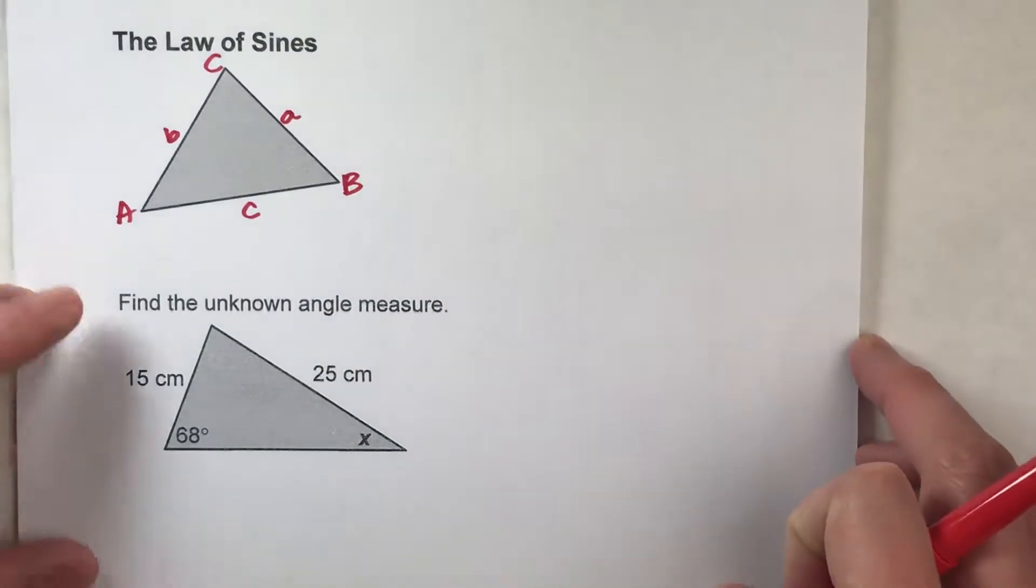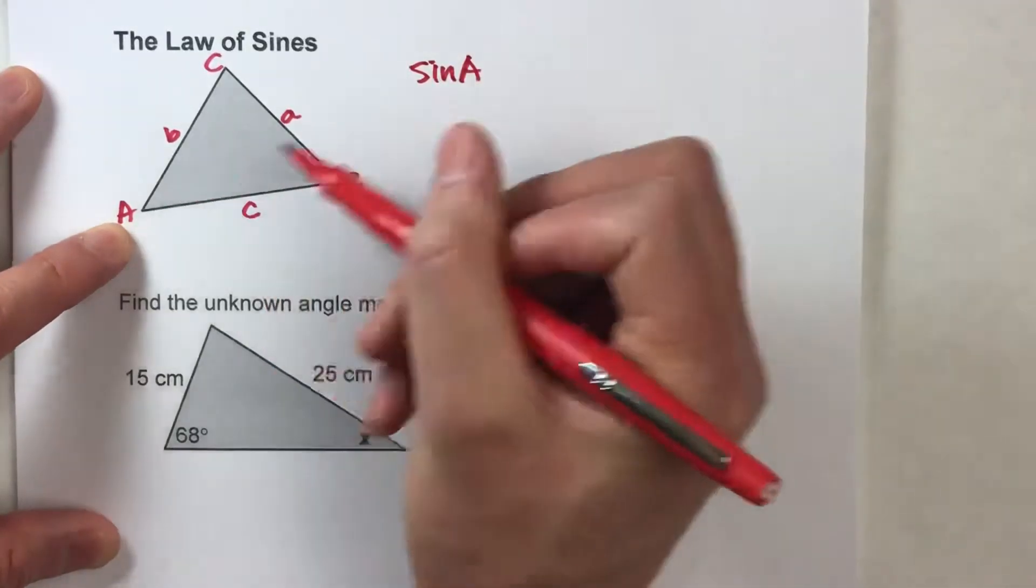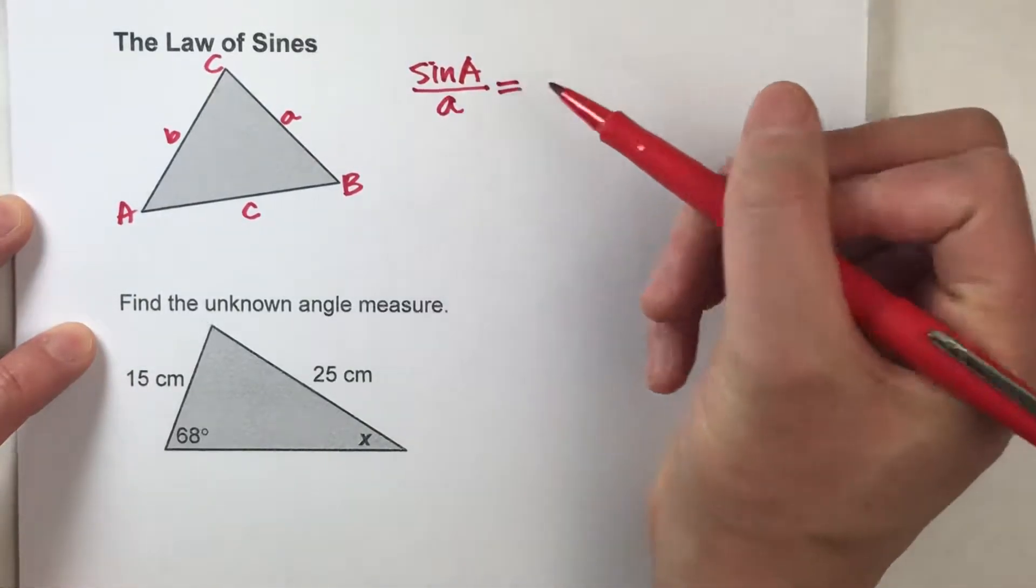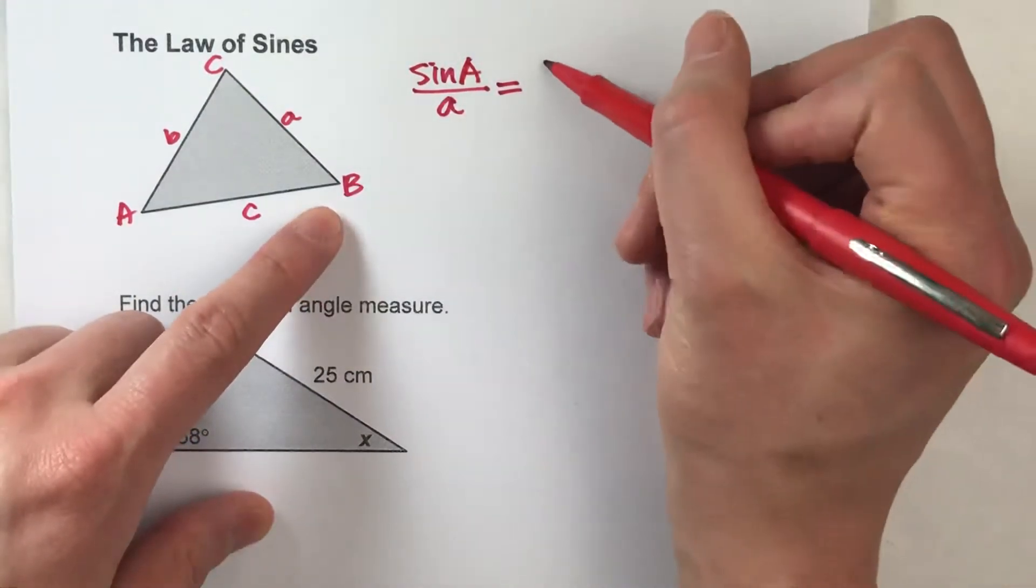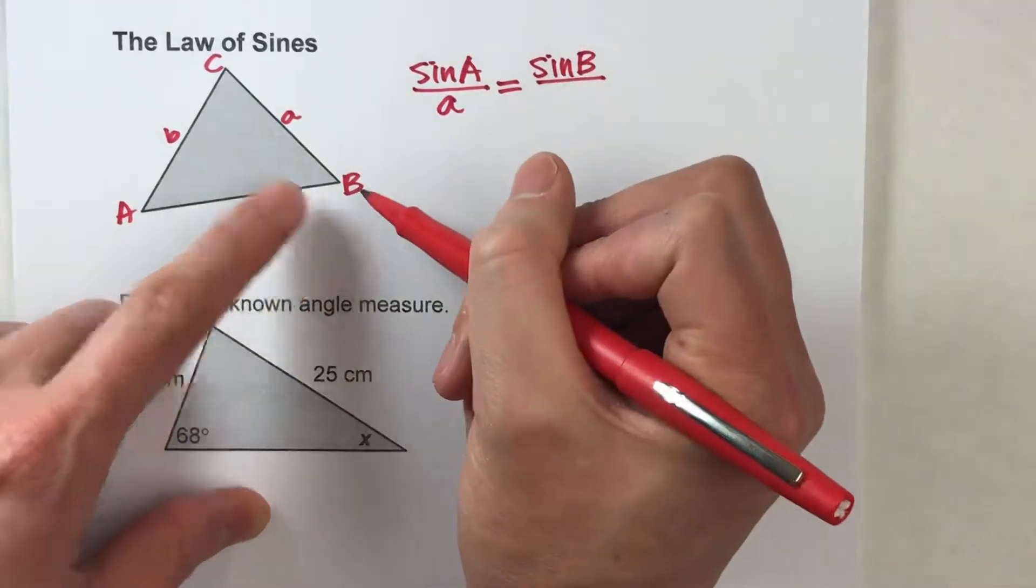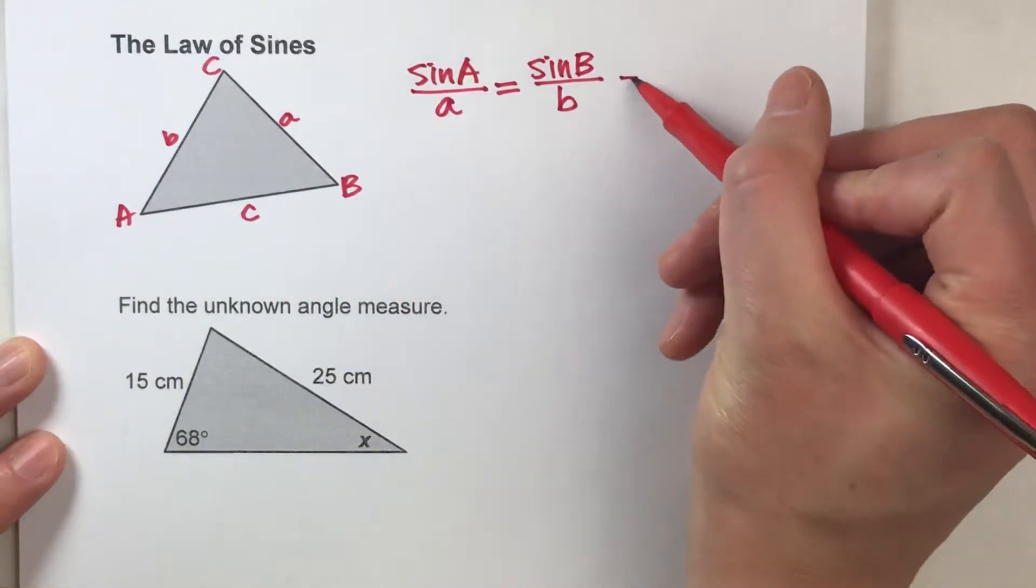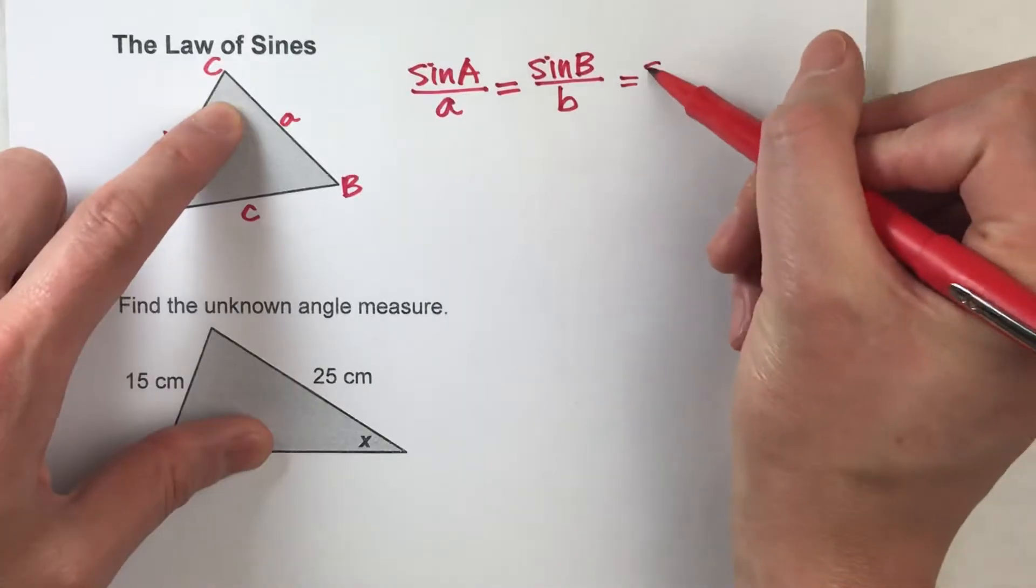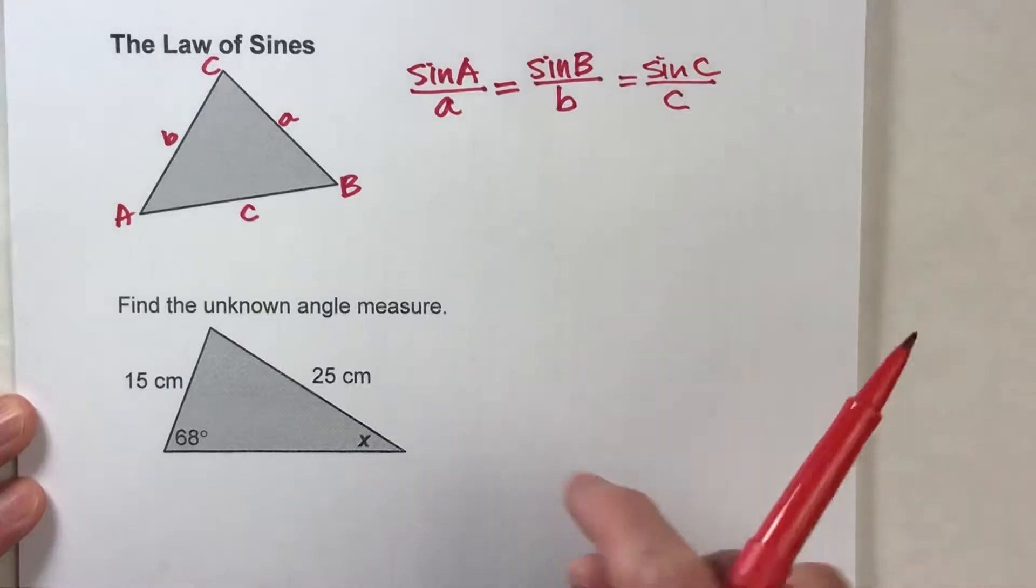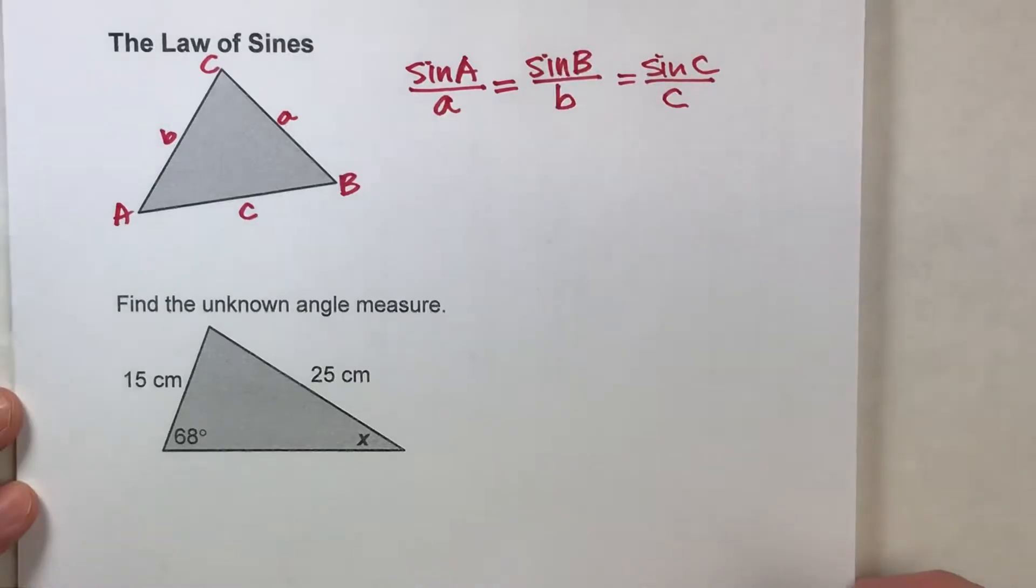So, the law of sines says that the sine of any angle, for example angle A, divided by the side length across from it, that's equal to the sine of any other angle, for example angle B, divided by the side length across from it. Or, it could also be equal to the sine of angle C, divided by the side length across from it. The law of sines says all three of these ratios are equal, so you can use any two to set up an equation.